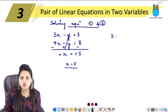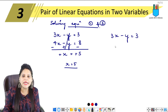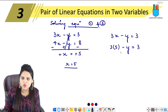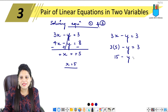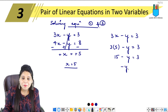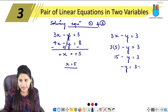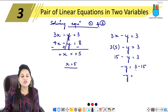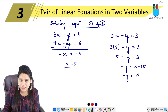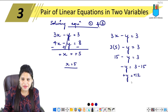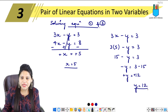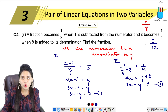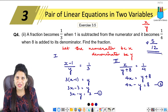Now substituting x equals 5 into the first equation: 3 times 5 minus y equals 3, so 15 minus y equals 3. Therefore minus y equals 3 minus 15, which gives minus y equals minus 12, so y equals 12. Thus x is 5 and y is 12, giving the fraction as 5 upon 12.